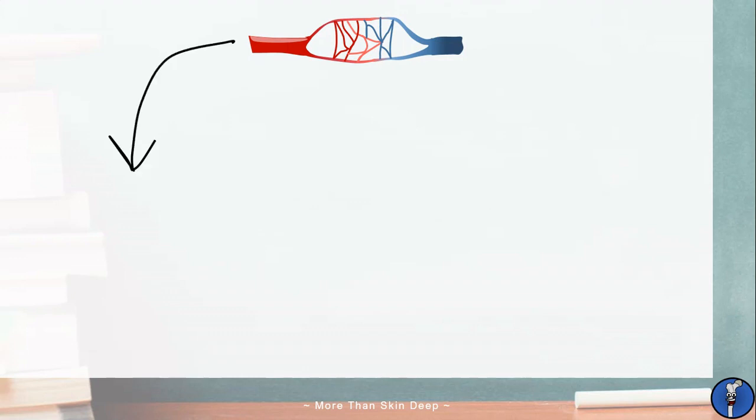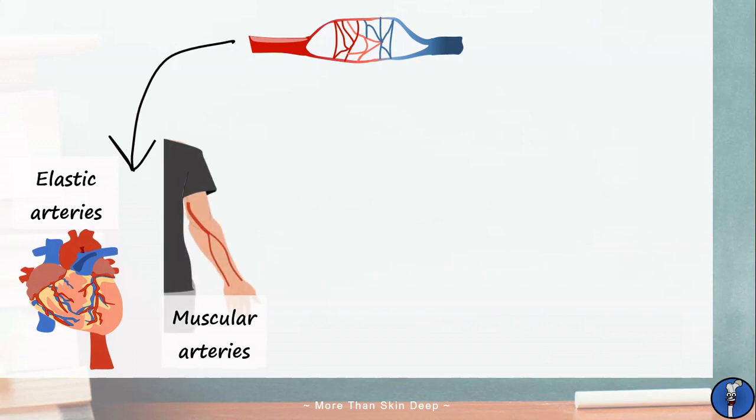First we have two specialized types of artery. These are elastic arteries which are found close to the heart and muscular arteries which are found pretty much everywhere else. A subtype of arterioles are metarterioles which are found in the capillary beds.